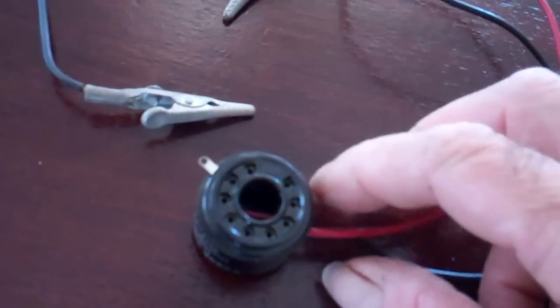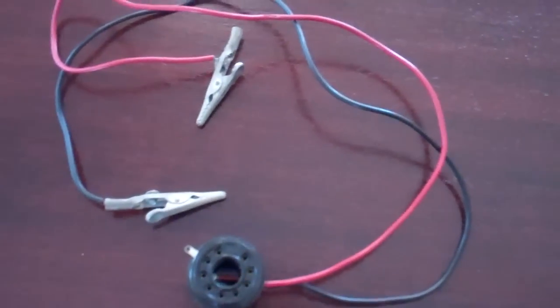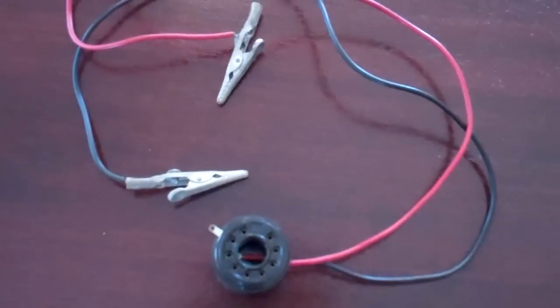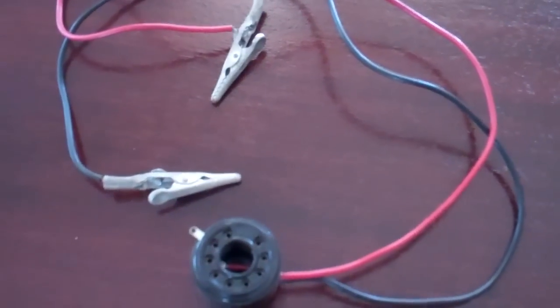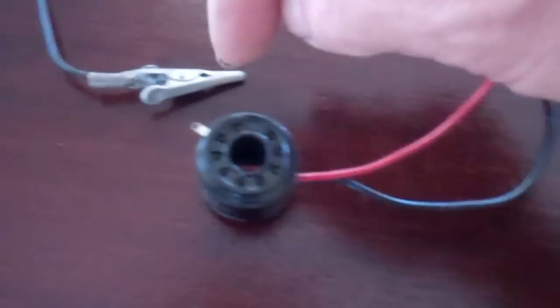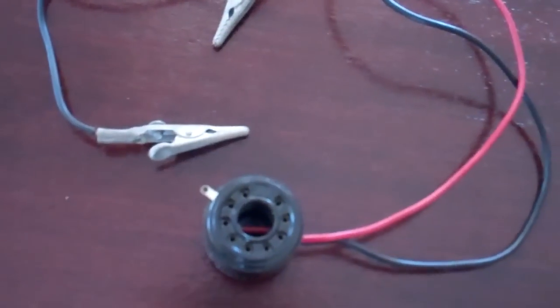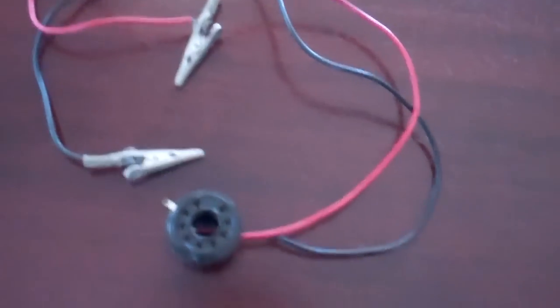What this does is this plugs into the tube, between the tube and socket, and lets you use these clip leads on your amp meter. It's also got a little test point there for the grid, to check grid drive.